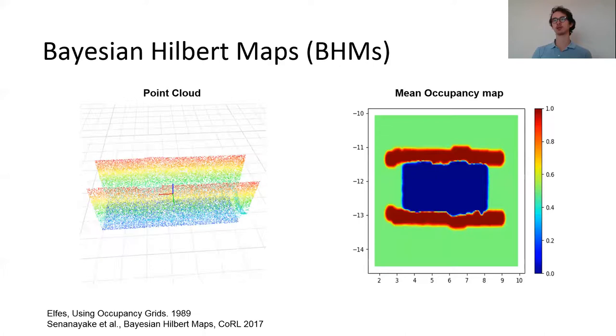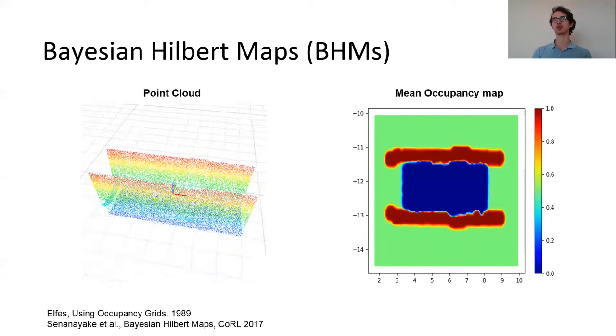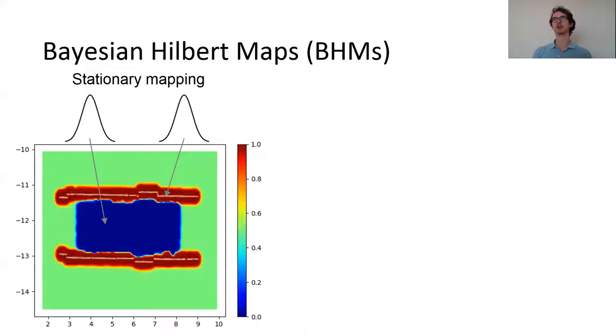Red indicates occupied areas, blue indicates free areas, and green are where we are not sure. Bayesian Hilbert maps rely on a particular kind of embedding called kernels, which are a particular way of continuously representing our LIDAR data.